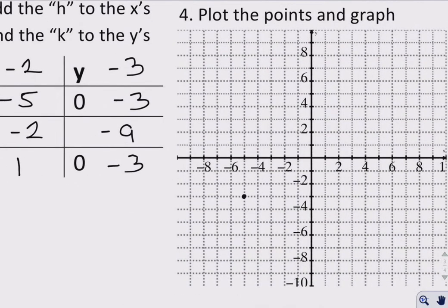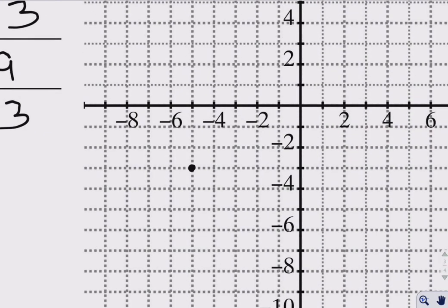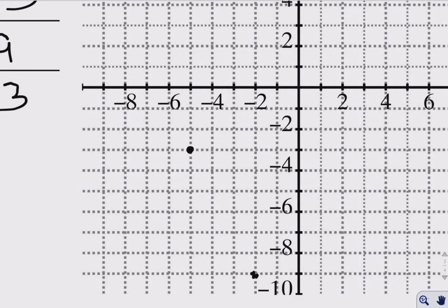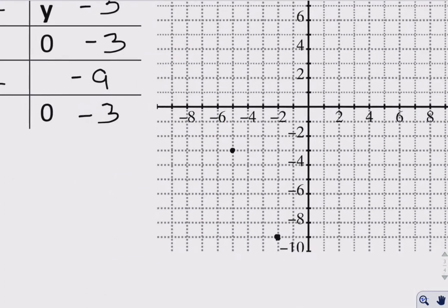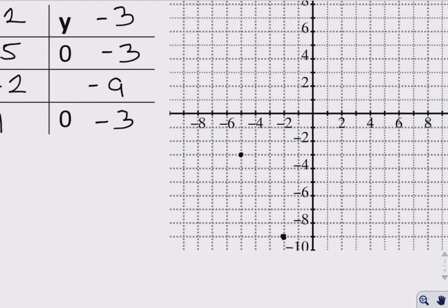Negative 2 and negative 9 is going to be over here, and we're going to go down 9. And the final point is 1 and negative 3, which is over here.